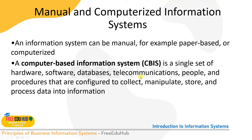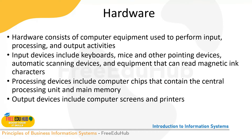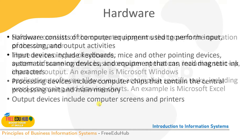In a CBIS, we use databases and telecommunication; people enter data and we have procedures and policies, collecting everything into a database. Hardware consists of computer equipment used to perform input and processing — anything you can touch, such as keyboards, mice, and pointing devices. Processing devices include computer chips containing the CPU and RAM. Output devices include computer screens and printers.